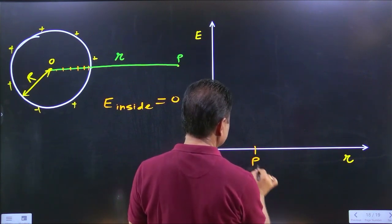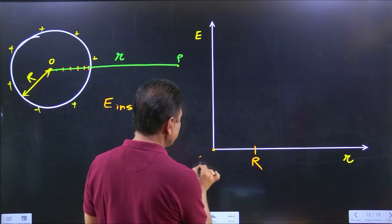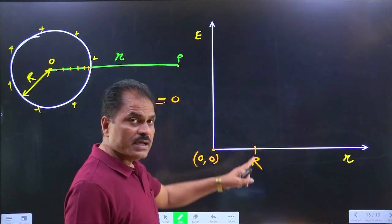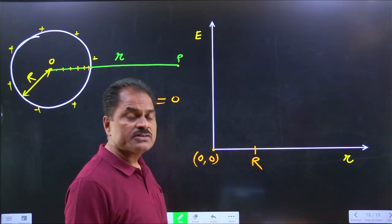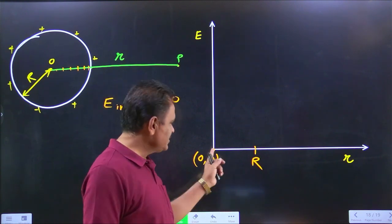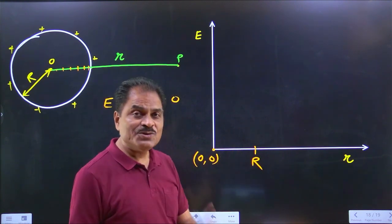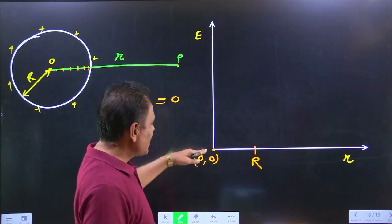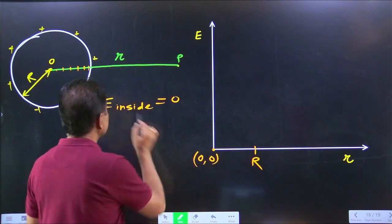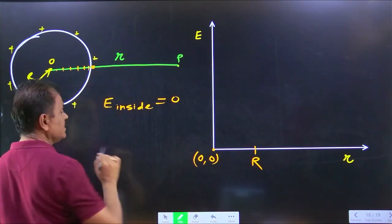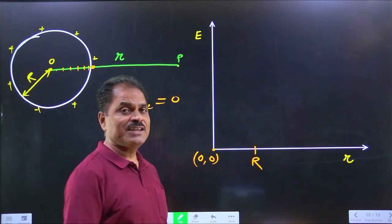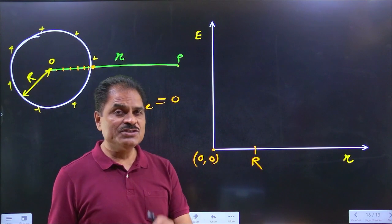Capital R. If this is zero from r going inward, the intensity is zero up to the surface. What is the electric intensity at a distance equal to the radius of that spherical conductor? Sigma by epsilon zero.